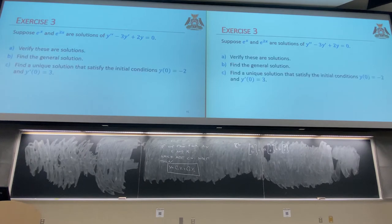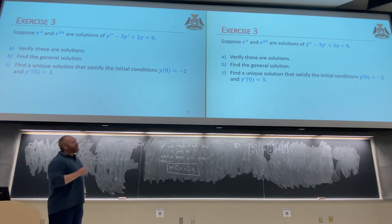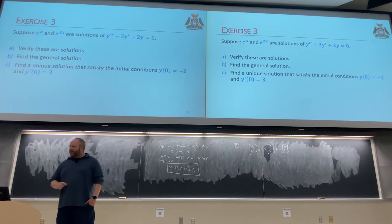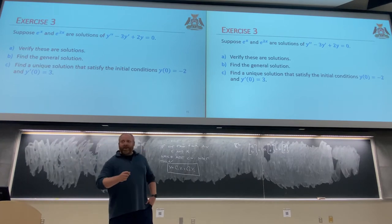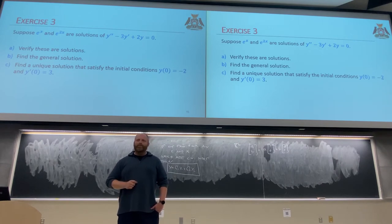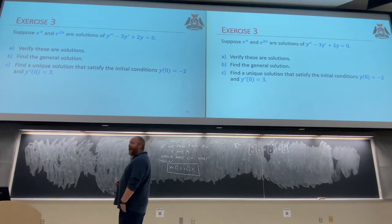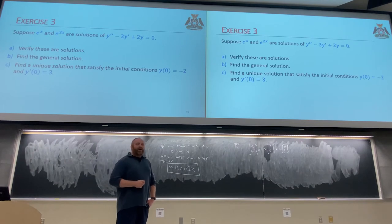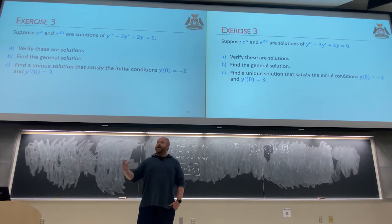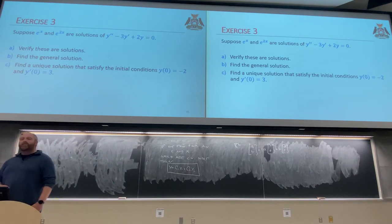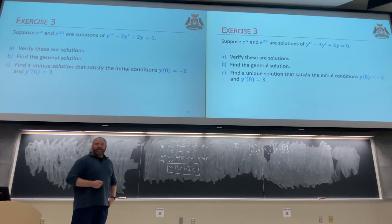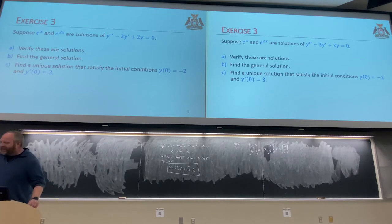For this exercise, I'm given that eˣ and e²ˣ are solutions to y'' − 3y' + 2y = 0. First we want to verify they are in fact solutions. If x + y = 7 and x = 5, y = 2, we verify by plugging in. Same idea here. Let y₁ = eˣ and y₂ = e²ˣ. I'm not asking if they're linearly independent yet — all I'm asking is: are they solutions?